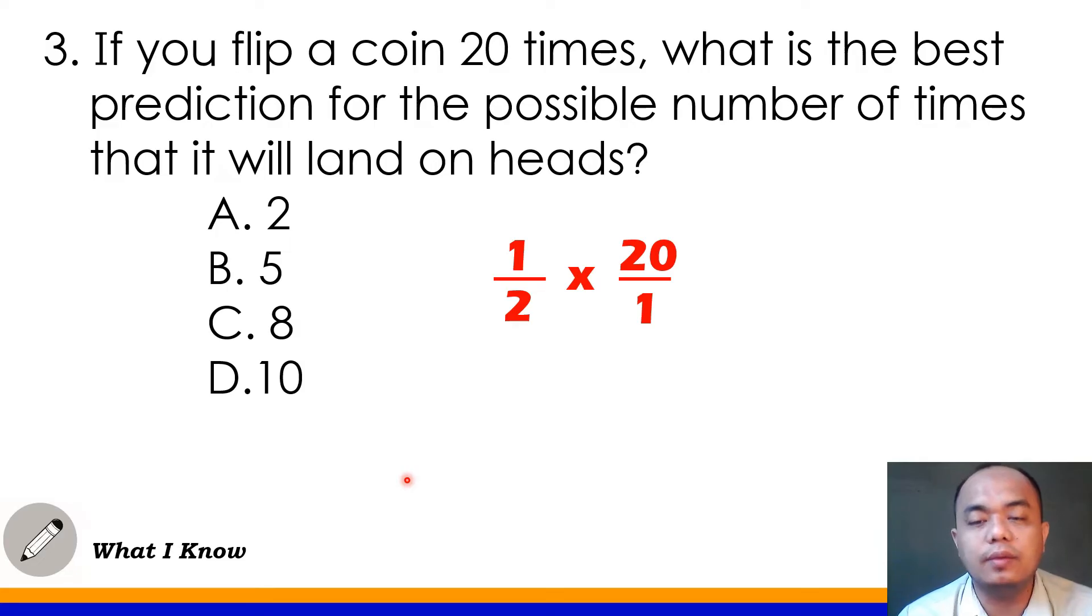So 1 times 20 would be? Yes, that's 20. 2 times 1 would be? Yes, that's 2. Now 20 halves or 20 divided by 2. How much is this? Yes, that's 10. So kung magpipredict tayo ang possible number of times na pwedeng lumabas ang head kung if i-flip natin ito 20 times, the answer would be 10. So the answer is letter D.